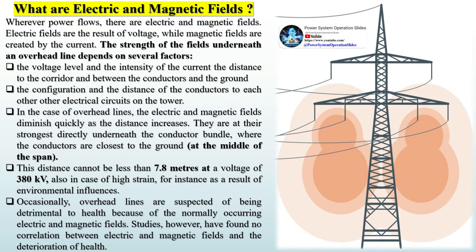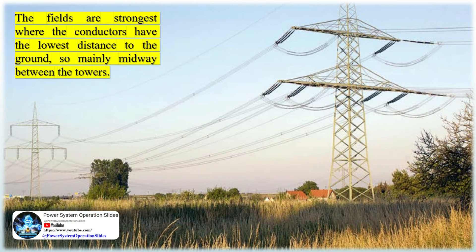What are electric and magnetic fields? Wherever power flows, there are electric and magnetic fields. Electric fields are the result of voltage, while magnetic fields are created by the current. The strength of the fields underneath an overhead line depends on several factors: the voltage level, the intensity of the current, the distance to the corridor between the conductors and the ground, the configuration and distance of the conductors to each other, and other electrical circuits on the tower. In the case of overhead lines, the electric and magnetic fields diminish quickly as distance increases. They are at their strongest directly underneath the conductor bundle, where the conductors are closest to the ground at the middle of the span. This distance cannot be less than 7.8 meters at a voltage of 380 kV. Studies have found no correlation between electric and magnetic fields and the deterioration of health.